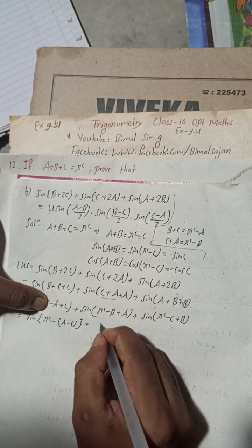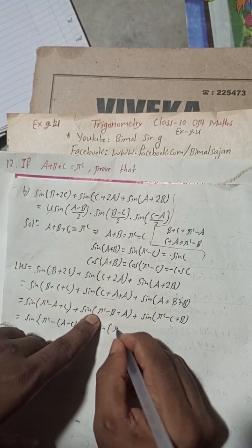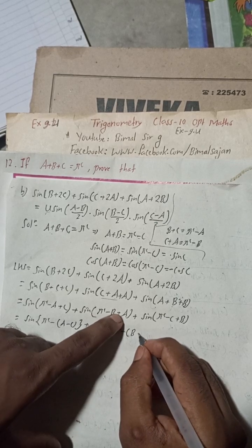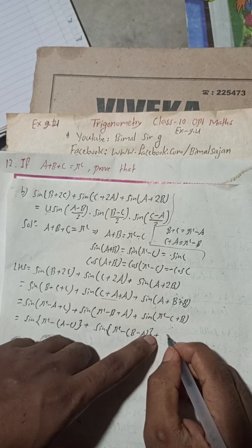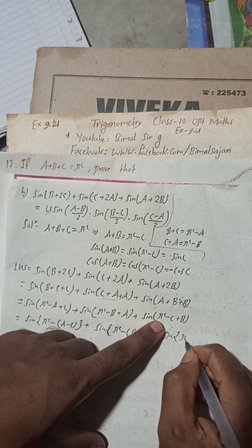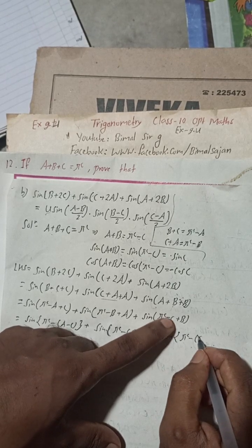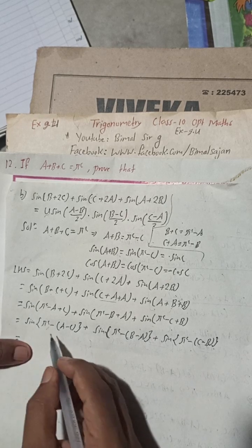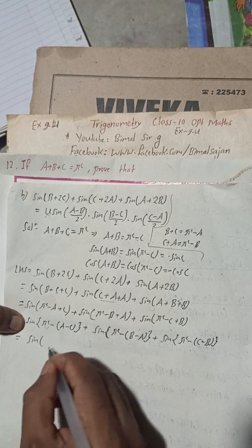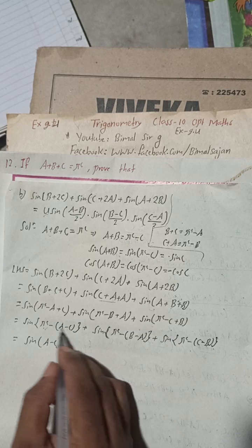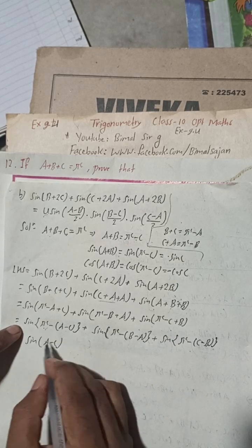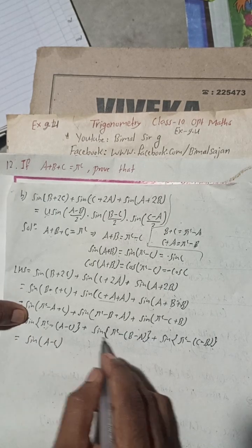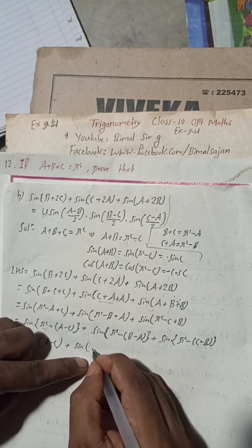Applying sin(π − θ) = sin(θ): the expression becomes sin(a − c) + sin(c − b) + sin(b − a), since pi minus anything keeps the sine positive. All terms are positive as they are in the second quadrant, confirmed by the CAST rule.